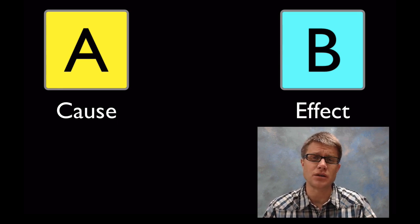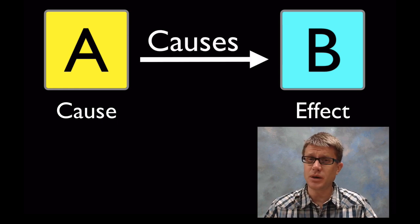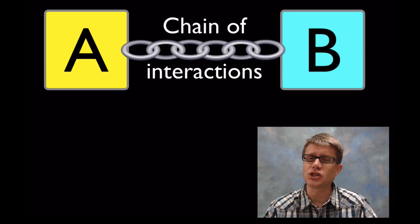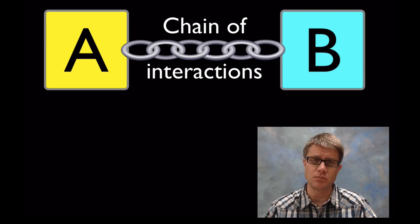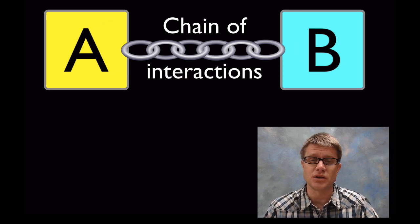One thing that we want to make sure students understand is that if we're saying A causes B, then we have to have a chain of interactions from A to B. We want to link A to B, make sure that A is causing B. Sometimes that's super simple.